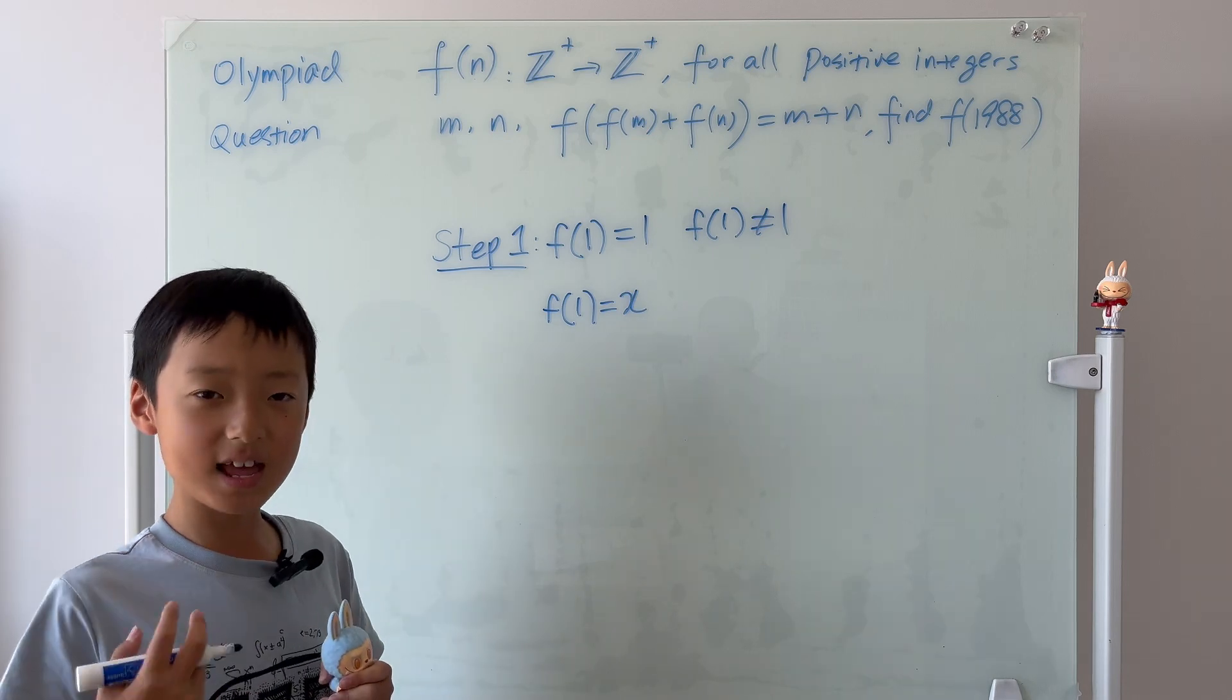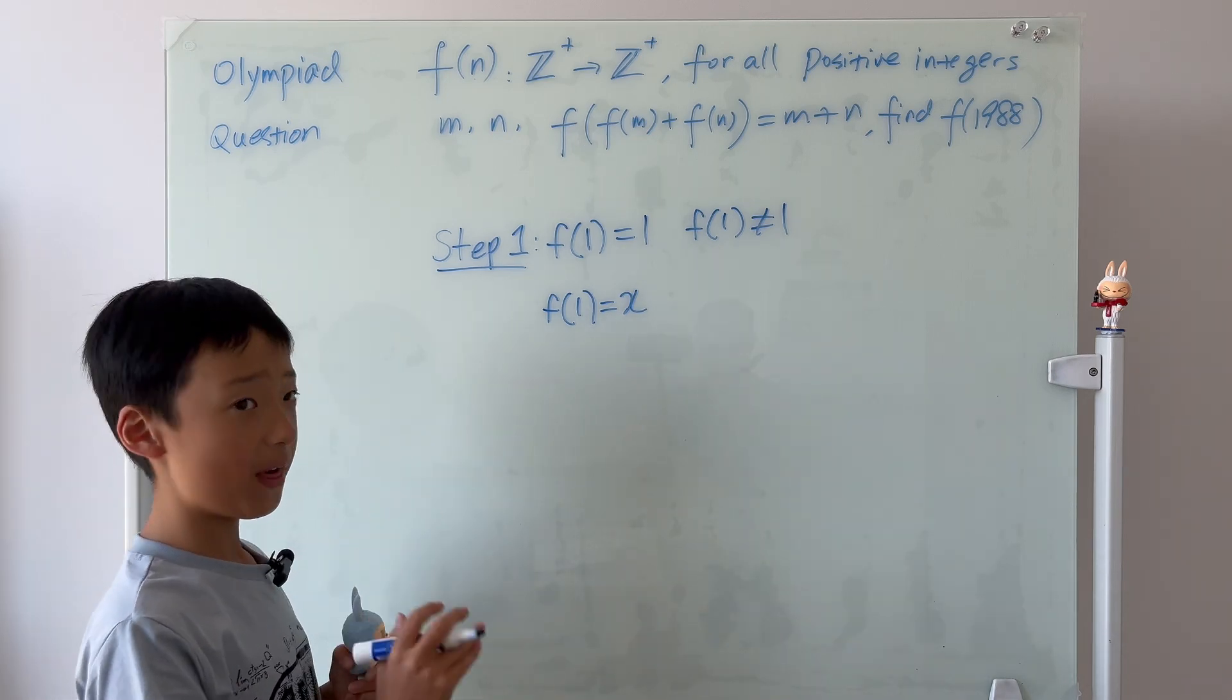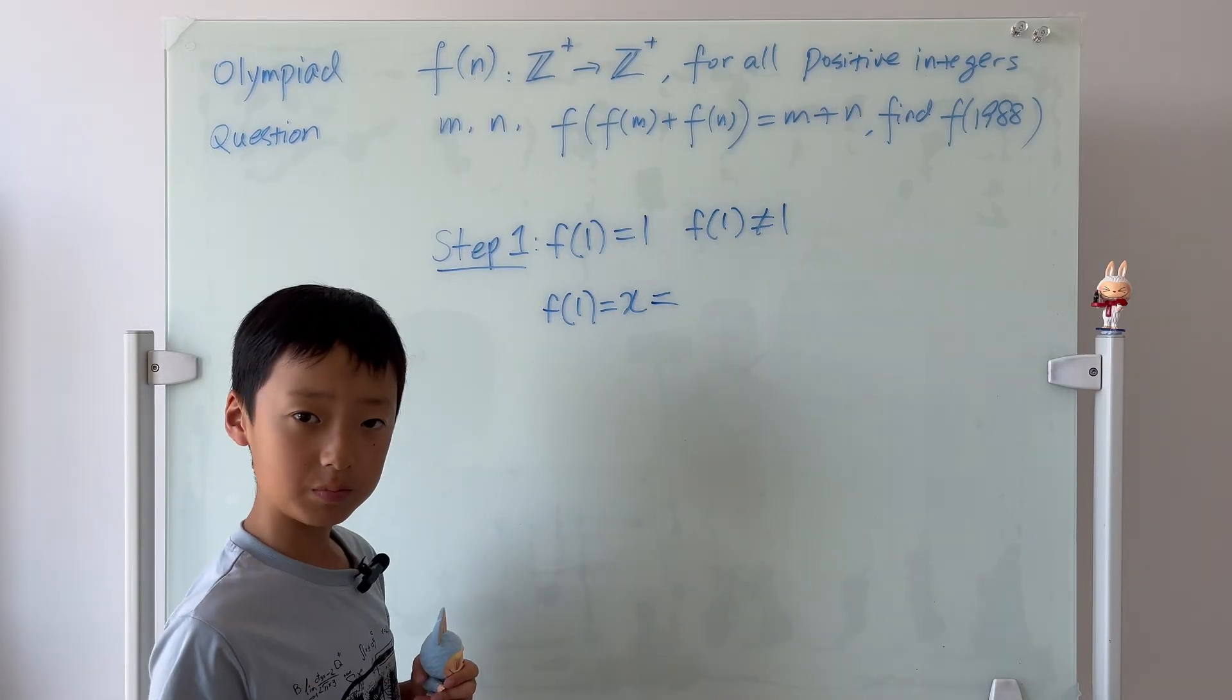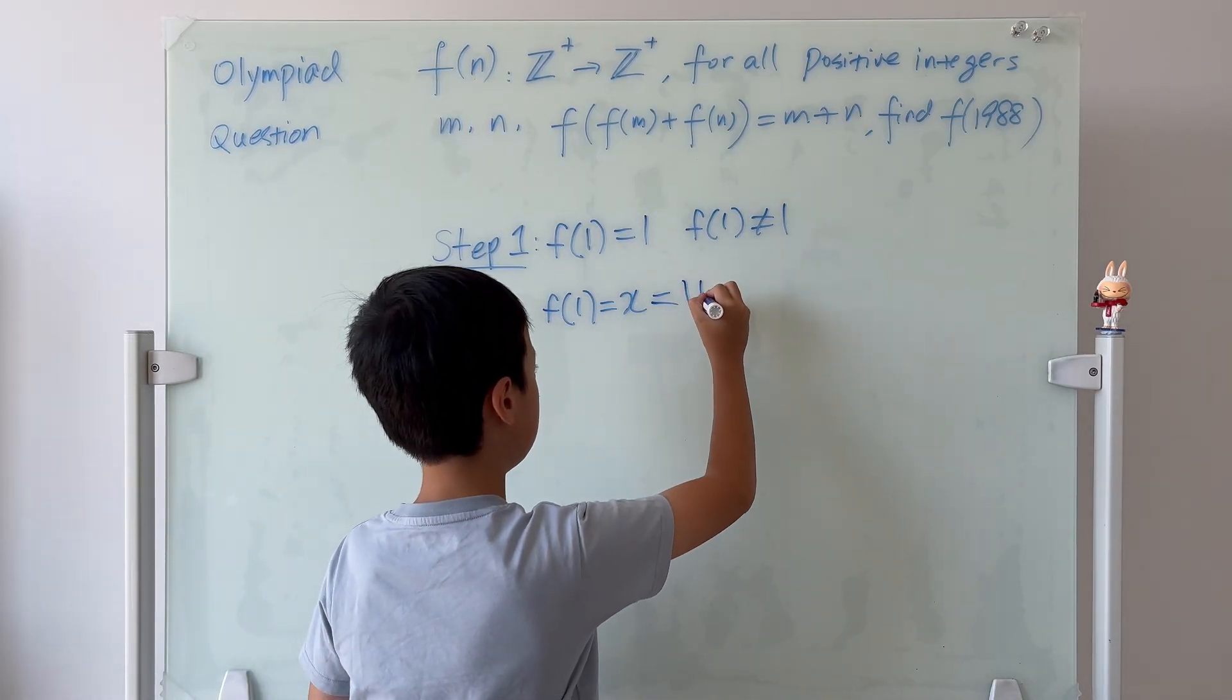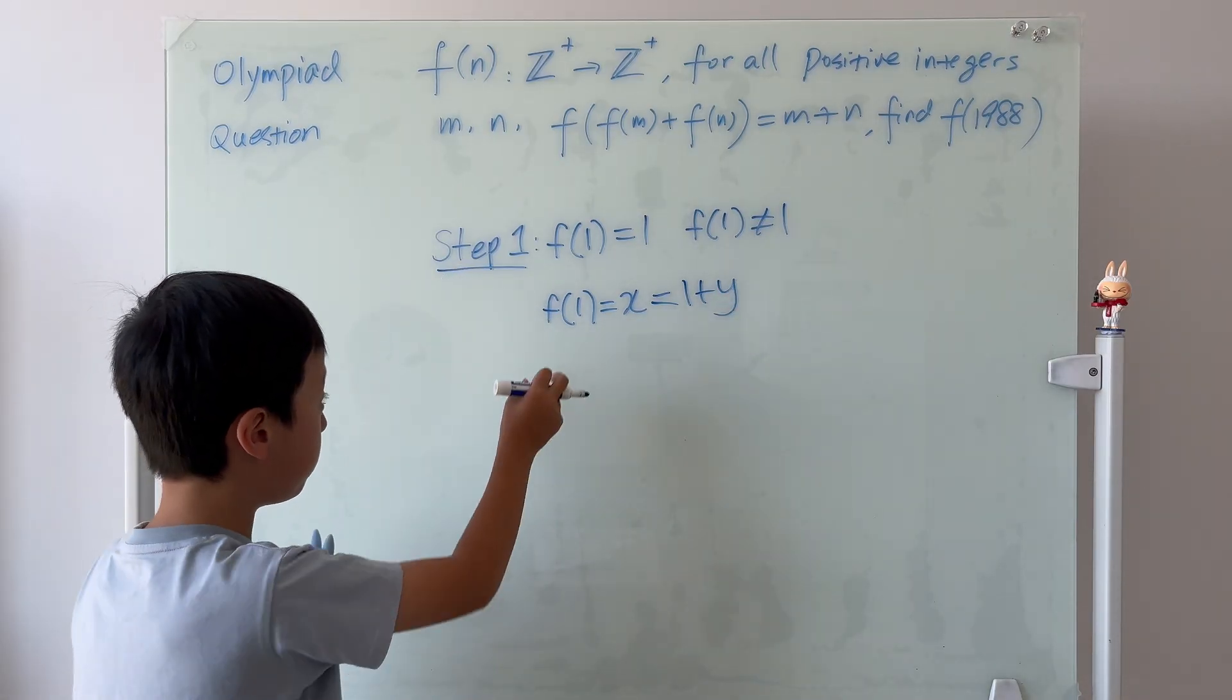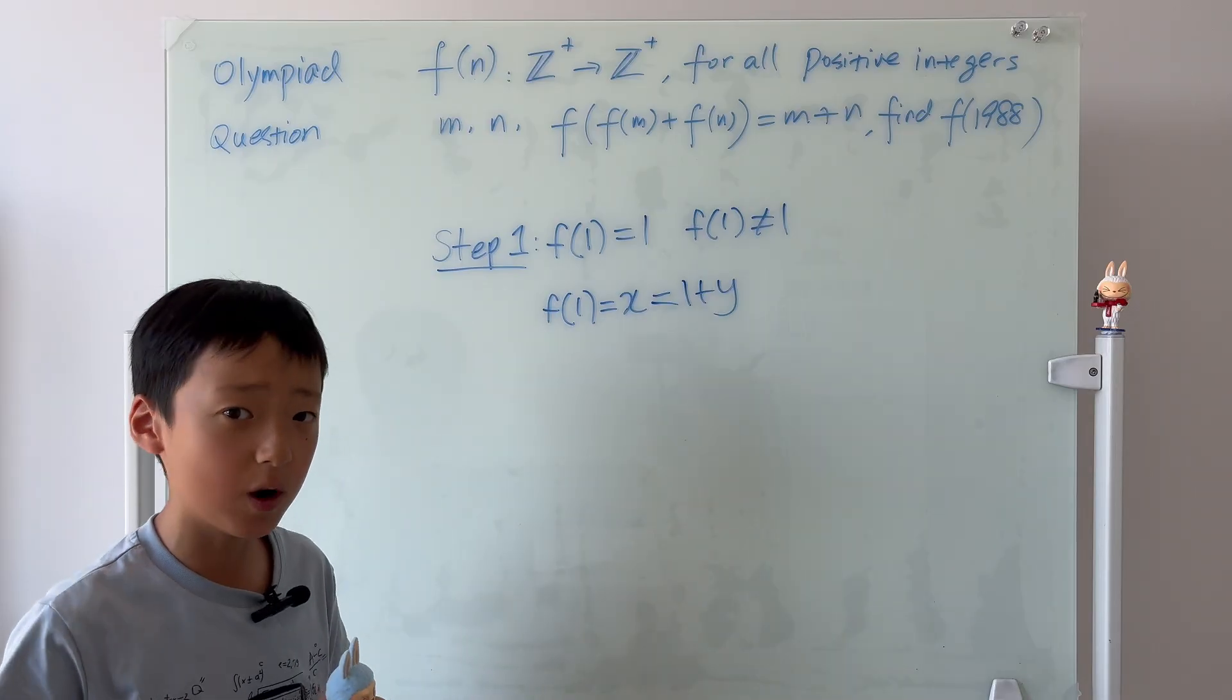So, we say that f of 1 is equal to x. And since x is greater than 1, then we know that it can always be written as 1 plus y. Right? So, then why don't we just try to plug in f of 1 in there and see what happens.